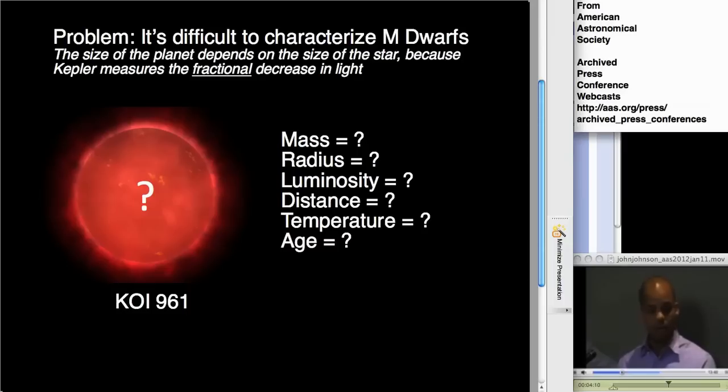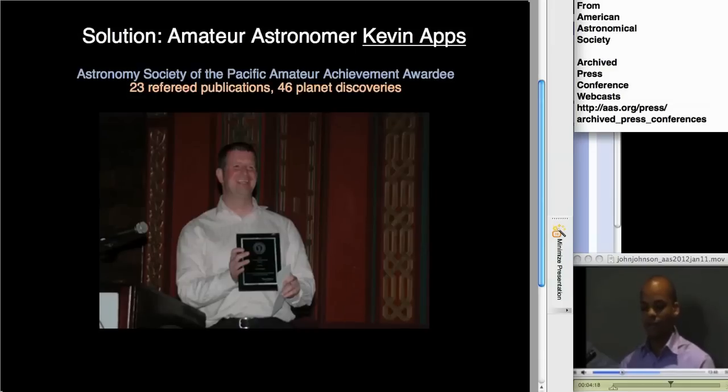Now, this is the problem. The solution is to turn to an amateur astronomer, a very good amateur astronomer named Kevin Apps. Here he is receiving his ASP Amateur Achievement Award earlier this year. He is a prolific planet hunter. He has 23 referee publications, 46 planet discoveries, 49 as of today. Kevin is an outstanding member of the Astronomical Society and absolutely key to our project because of his encyclopedic knowledge of stars. When he looked at the colors and other properties that we measured for our star, KOI 961, he sent us an email immediately and said, do you guys realize that you are looking at a twin of a very famous star called Barnard's star?